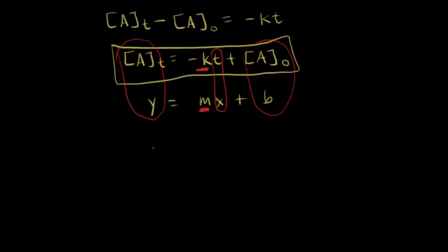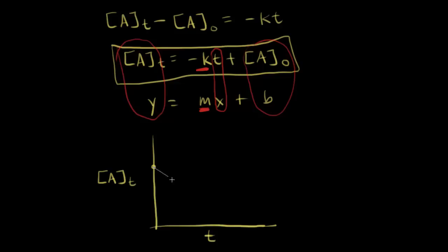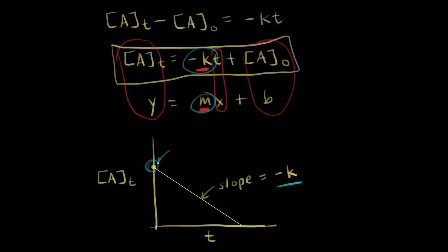Let's sketch out a quick graph. We put time on the x-axis and concentration of A on the y-axis. We get a straight line, and the slope of that line equals negative K — so m equals negative K. The y-intercept is the initial concentration of A. This is the integrated rate law for a zero-order reaction.